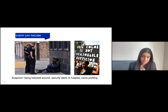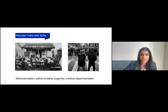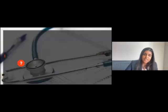Another example of everyday racism is suspicion, being followed around, security alerts in hospitals around certain groups, and racial profiling. The COVID-19 pandemic highlighted scapegoating, most notably with bias toward the Asian American community. Racism has manifested in its most extreme forms as dehumanization, from forced sterilization abuses and eugenics to medical experimentation and police brutality.